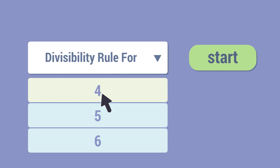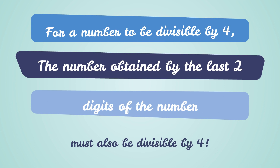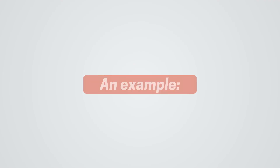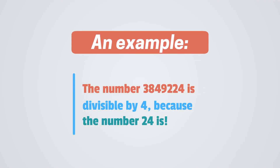Now let's take a look at the divisibility rule for 4. For a number to be divisible by 4, the number obtained by the last two digits must also be divisible by 4. For example, the number 3,849,224 is divisible by 4 because the number 24 is.